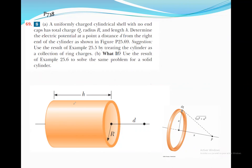Problem 69: a uniformly charged cylindrical shell with no end caps — it's open — with negligible thickness, with a charge capital Q, radius R, and length H. Determine the electric potential at a point P located on the x-axis of this cylinder at a distance d from the right side. The suggestion is to use the result of Example 25 by treating the cylinder as a collection of ring charges.